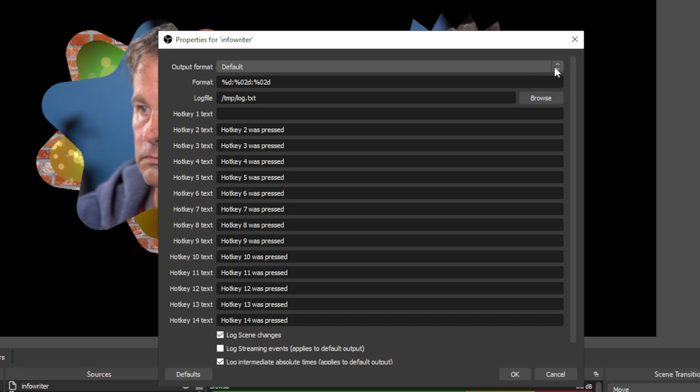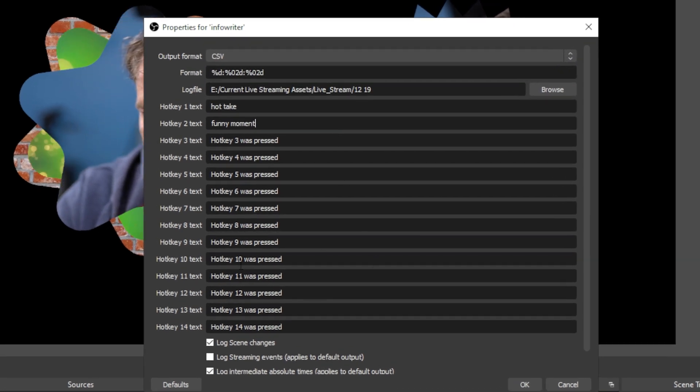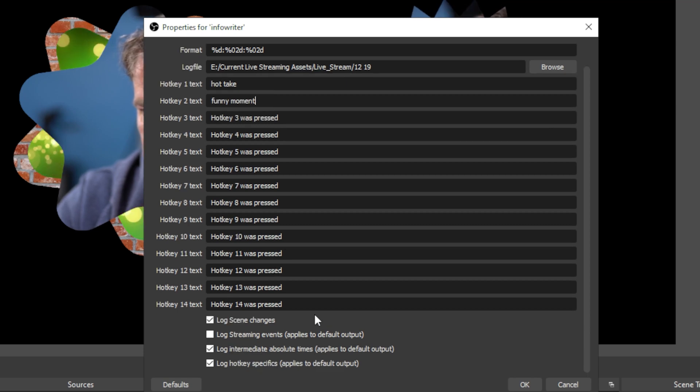And that text file is going to have marking points for your live stream that's going to make it easy to separate and edit later.